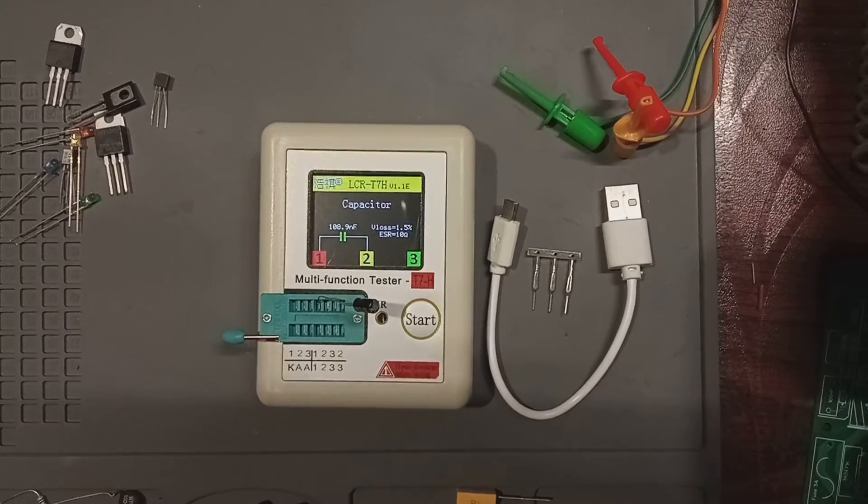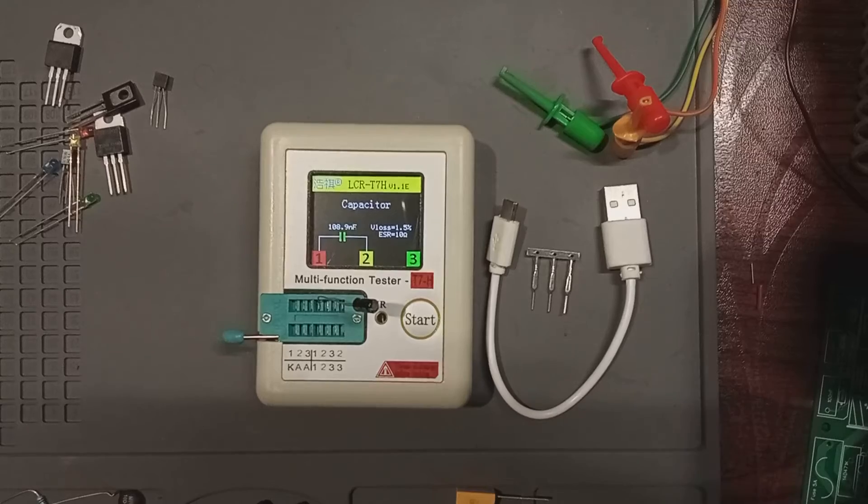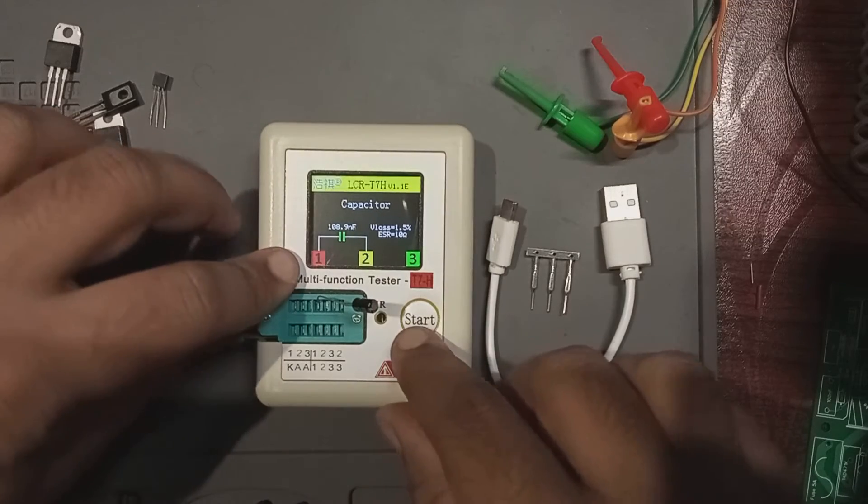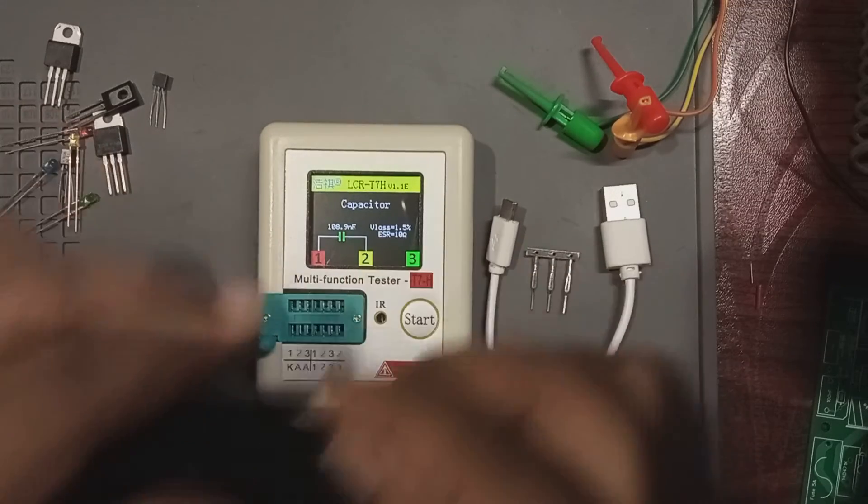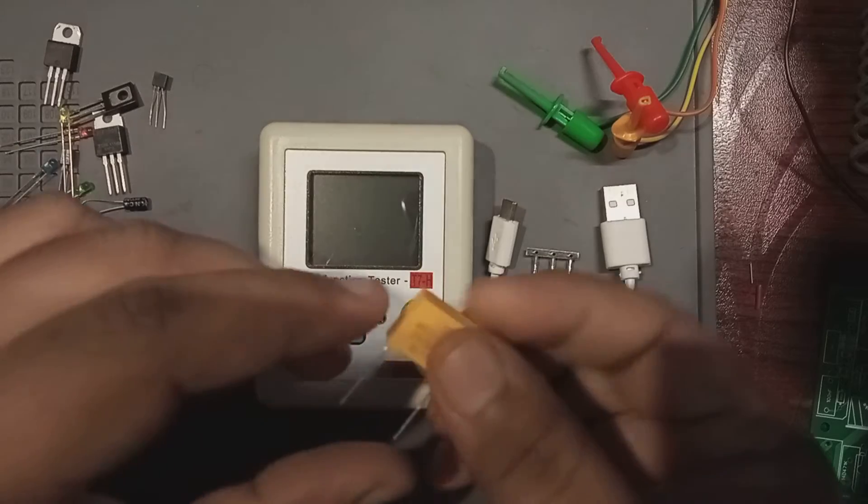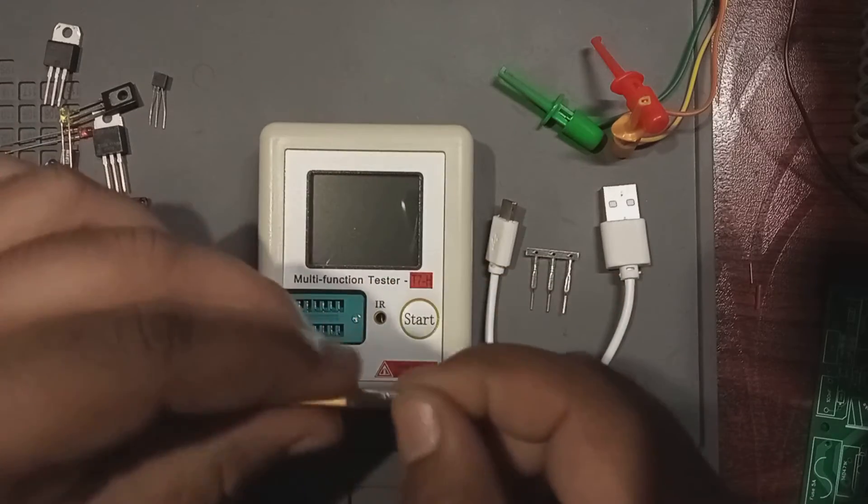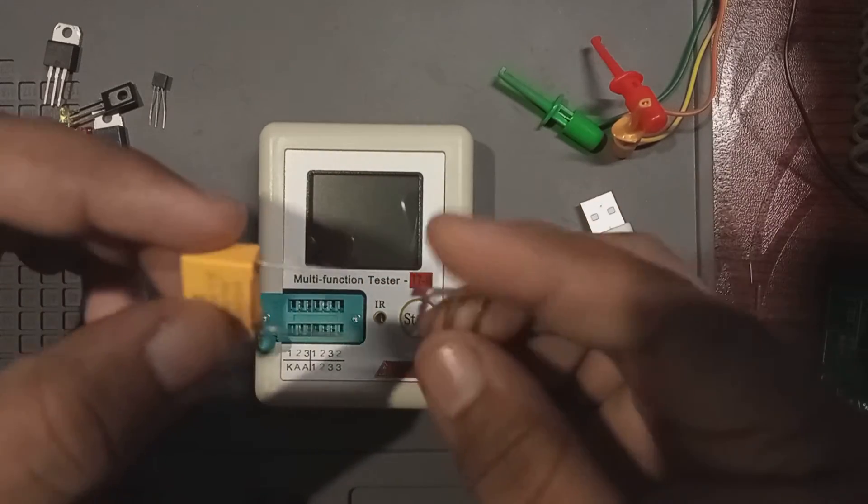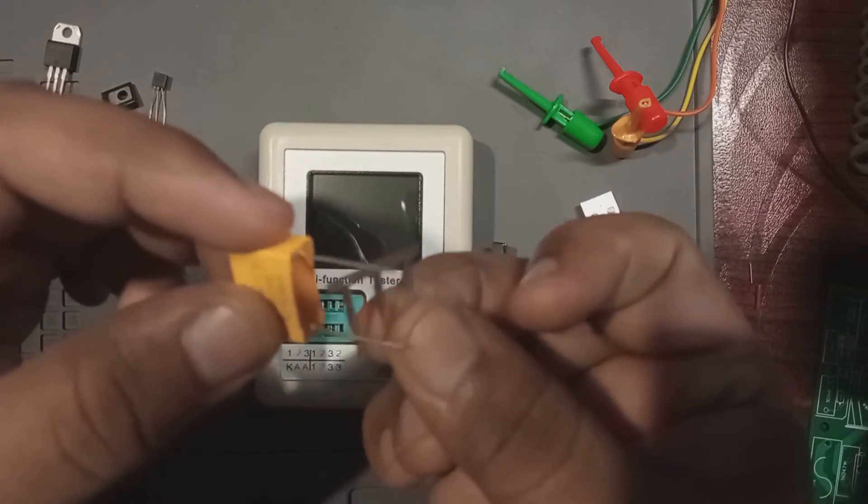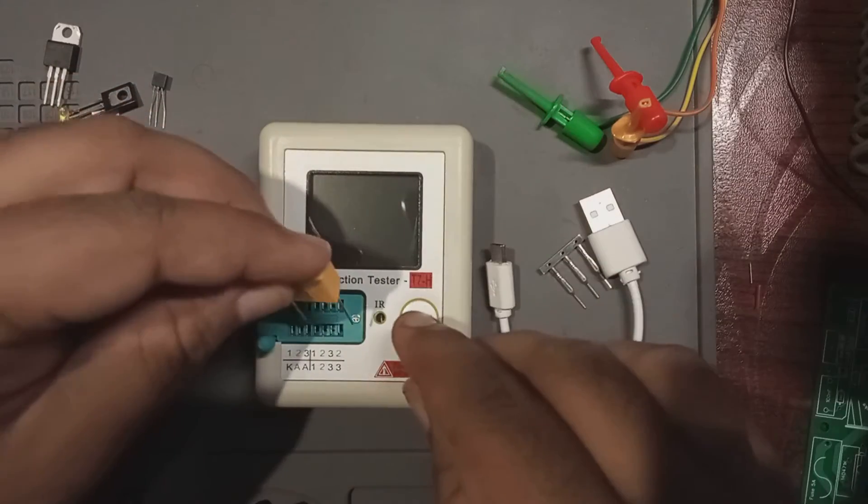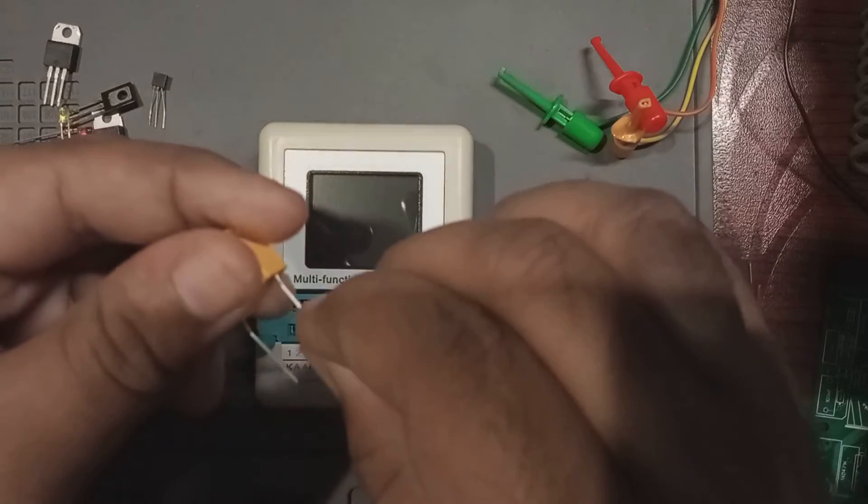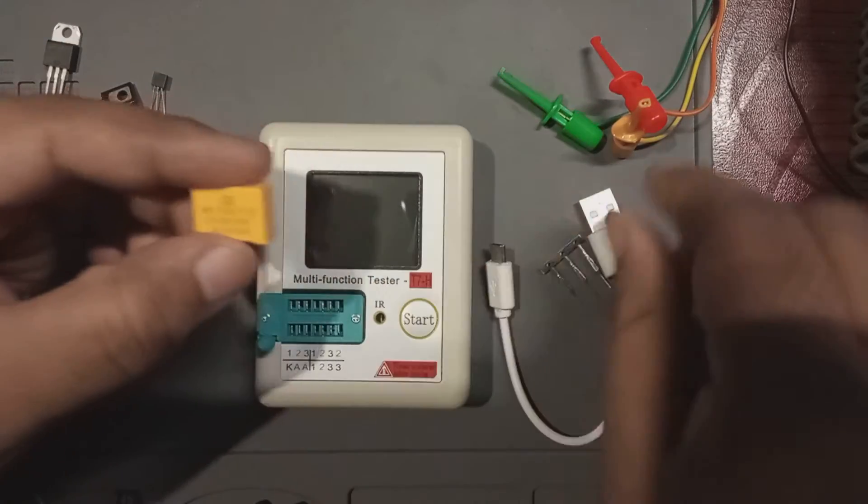Let's now put a 330 nanofarad high voltage X2 capacitor here. It is very important to make sure that the capacitor is not charged. I'm going to discharge it with this metal piece here to make sure the capacitor is discharged completely. It is not going to fit in here, so I'm going to use the plungers given with the meter.